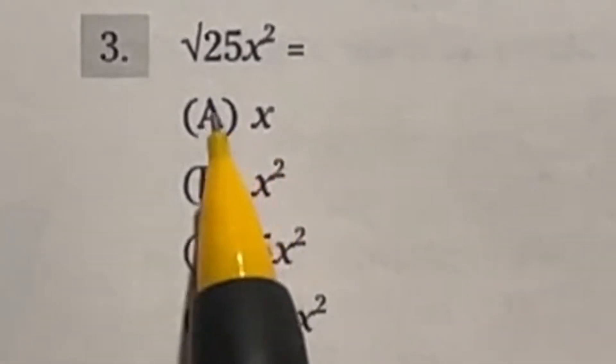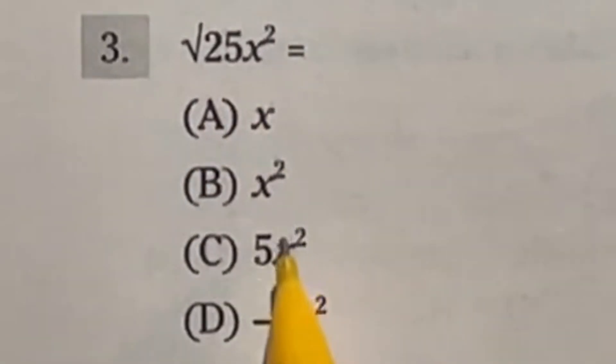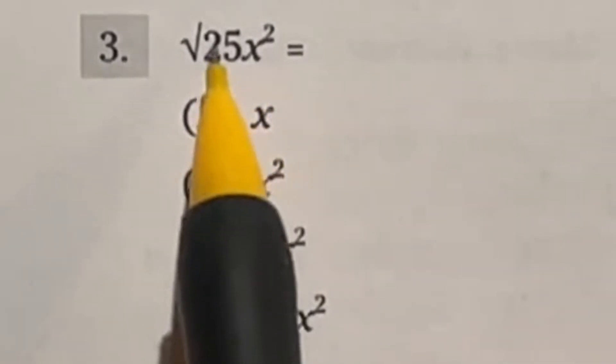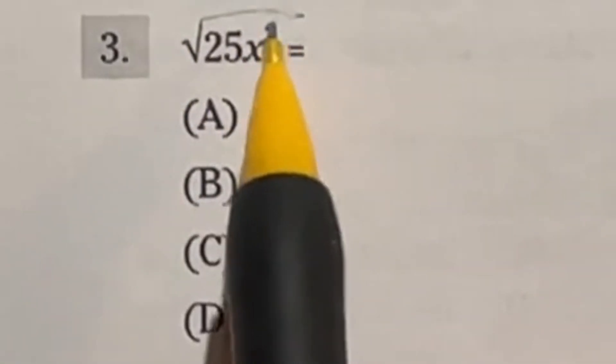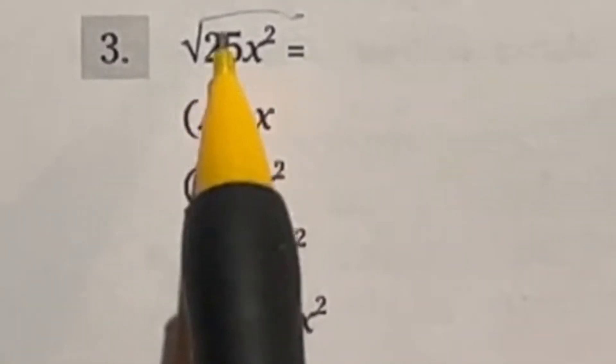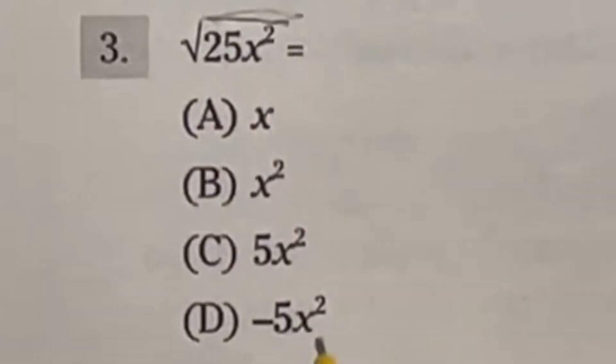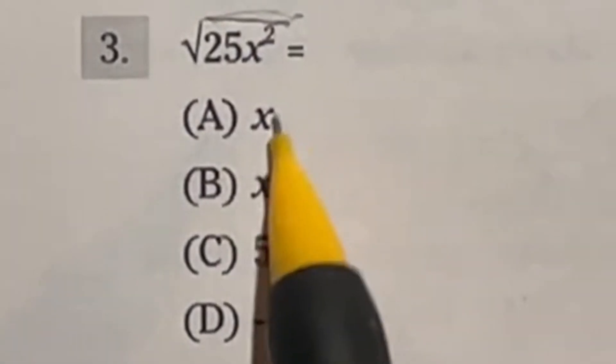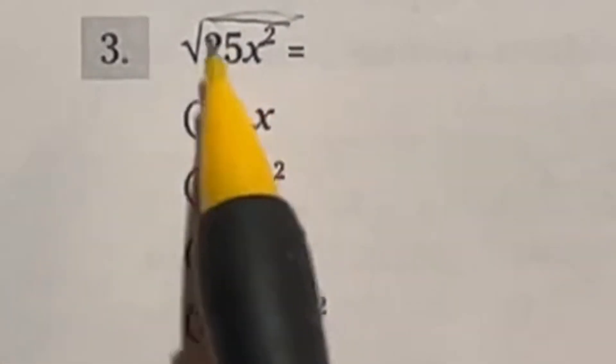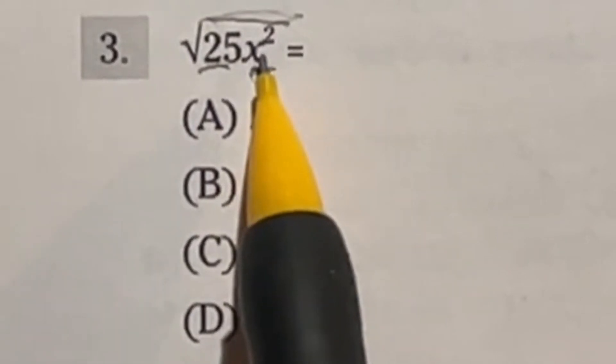Question 3 should be a quick one here. It says the square root of 25 times x squared is equal to what? Now you may be thinking, are we taking the square root of like this whole thing? Or is it just the square root of 25? It's not really super clear. I would imagine if there's not a line going all the way across, it's probably just the 25. But let's go ahead and double check if our answers give that away. So if we are taking a square root of the whole thing, then you would take a square root of the front and the square root of the x squared, both of them. And since they're being multiplied, you can separate them out like that.